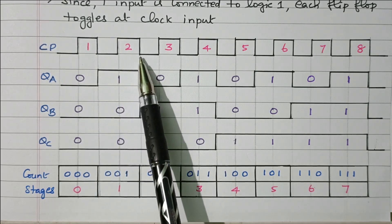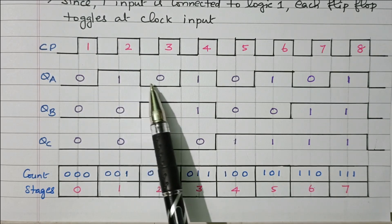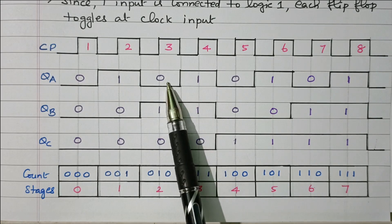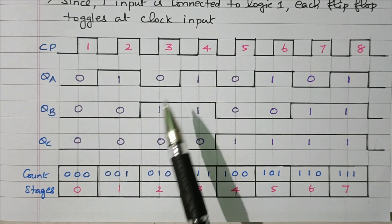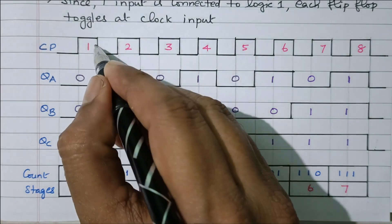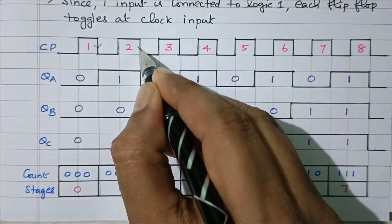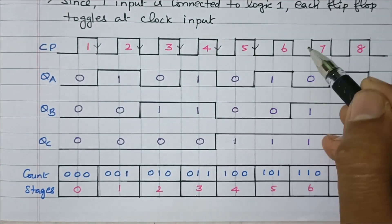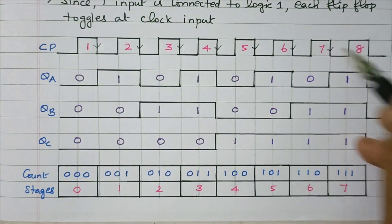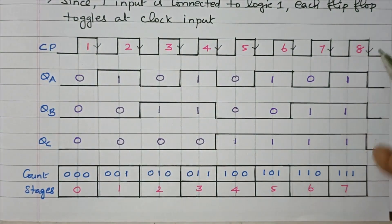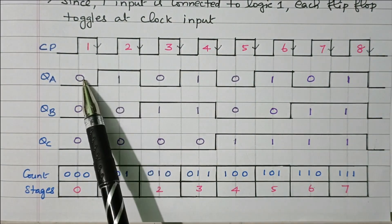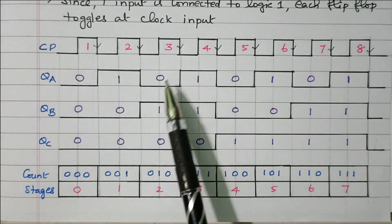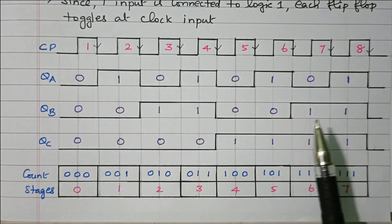Initially QA is 0. During the first negative edge, 0 changes to 1. During the next negative edge, 1 changes to 0. At the next negative edge, 0 changes to 1 again. Due to the inverter, during every trailing edge the output of the flip-flop toggles — 0 to 1 then 1 to 0, and so on.